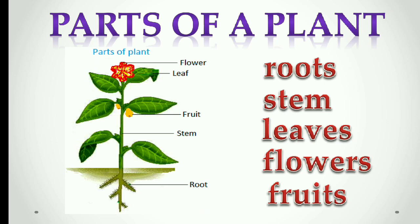The main parts of a plant are roots, stem, leaves, flowers, and fruits.